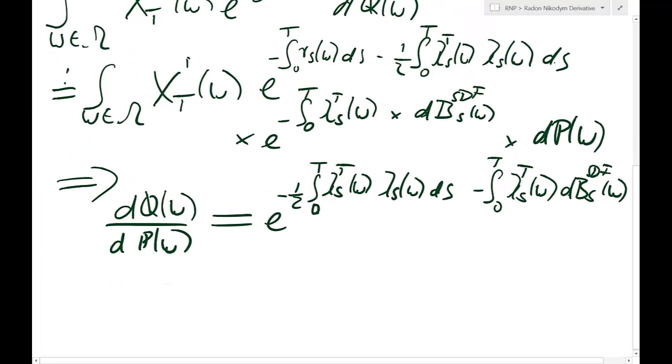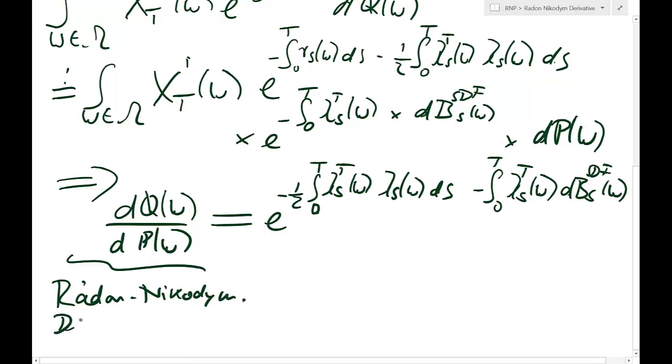Now that is the Radon-Nikodym derivative. It gives us the statistical distance between the risk-neutral probability Q and the physical probability P, and that statistical difference depends only on this exponential martingale of the market price of risk. So the Radon-Nikodym derivative is nothing else than that statistical distance.